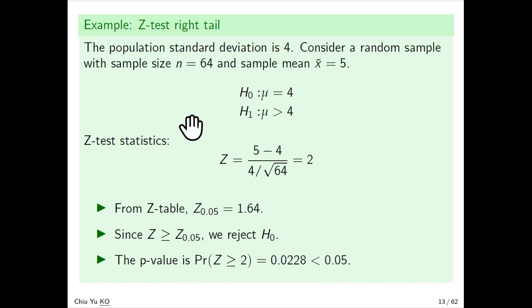Let's see an example. With a population standard deviation of σ = 4, we consider a random sample of size n = 64 and sample mean x̄ = 5. We want to test whether μ = 4 versus μ > 4. First, construct the Z test statistic: z = (5-4)/(4/√64) = 2. From the Z table, z_α = 1.64.